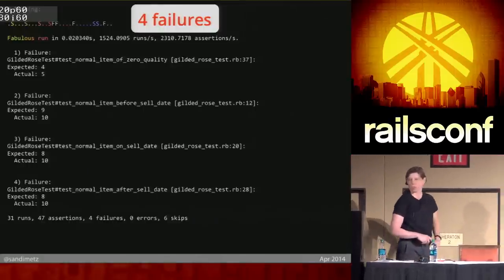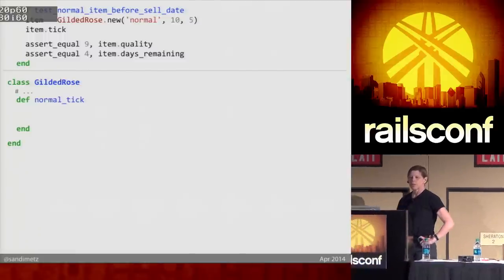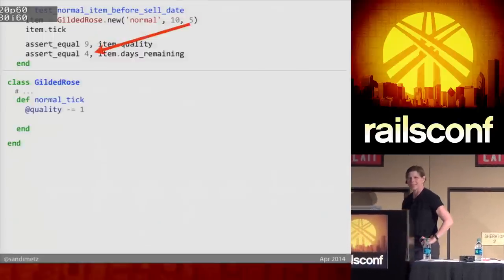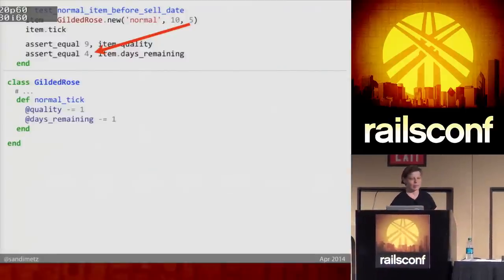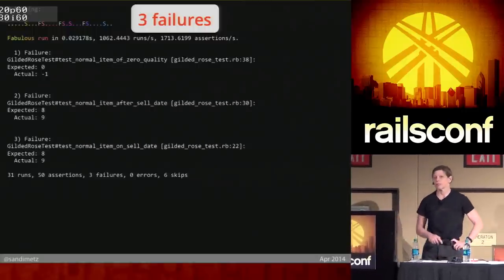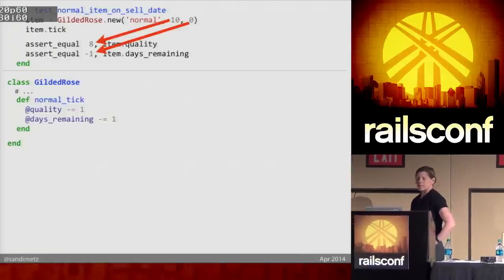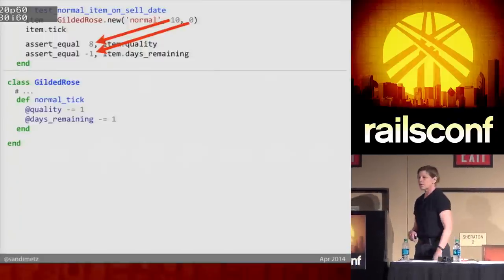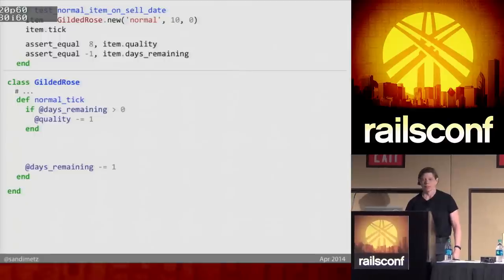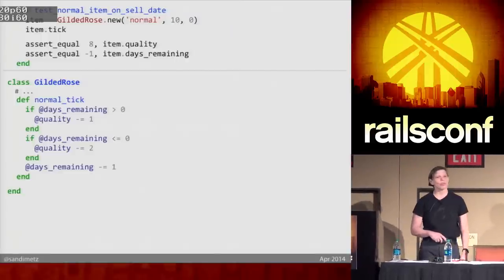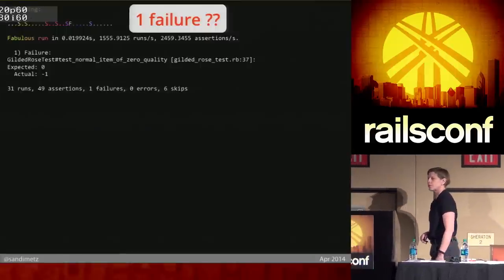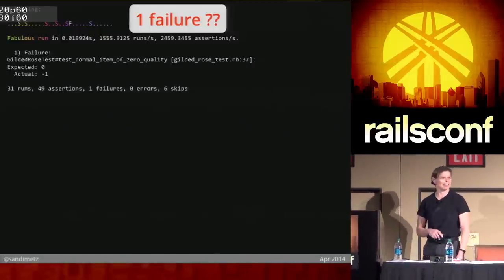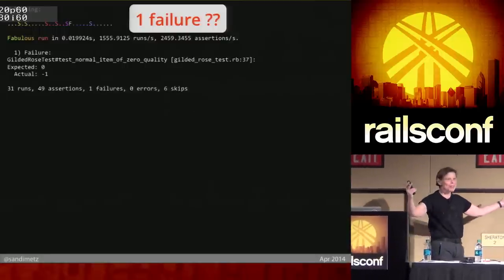I am not about to add more code to the tick method, so I'm just going to send a message to myself. Four tests should still fail — and they do. Now that I believe I've caught that execution path, I'll break open the first test and write the code to make it pass. Quality goes down by one. Days remaining goes down by one. That test passes. Here's the next test: I'm on the sell-by date, so now quality goes down by two. I'll write code to make that pass. Two tests should pass; two failures. But something I just did made a test I haven't looked at pass — and we love that.